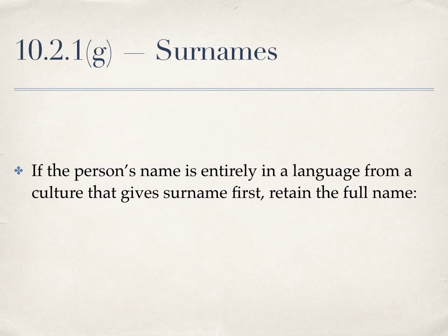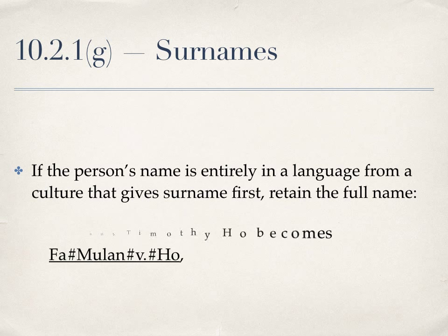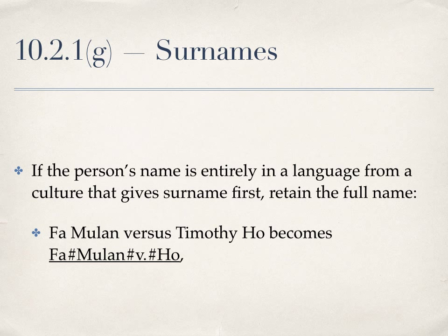If a person's name is entirely in a language from a culture that gives the surname first, such as Chinese, Vietnamese, and Korean culture, retain the full name. So in the case of Fa Mulan v. Timothy Ho, it becomes Fa Mulan v. Ho.